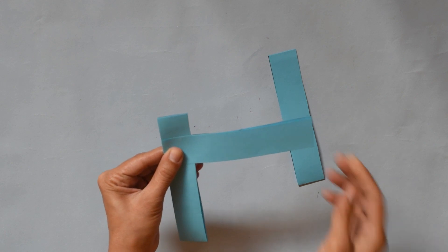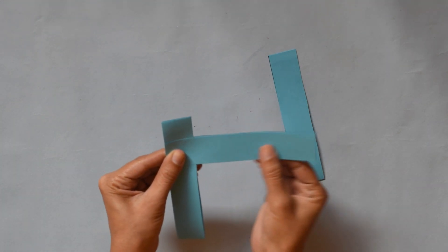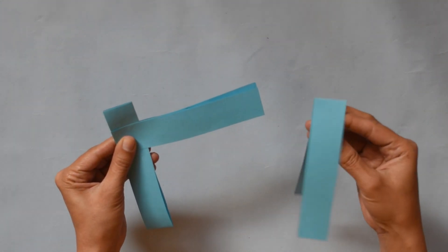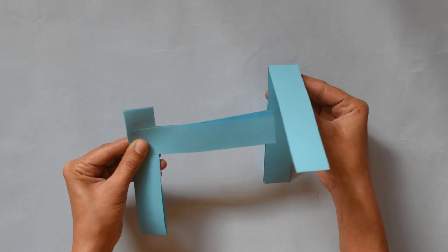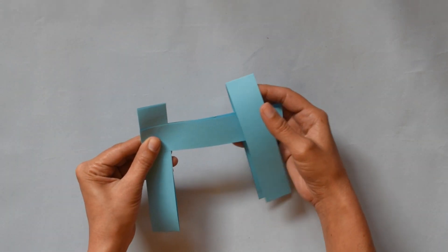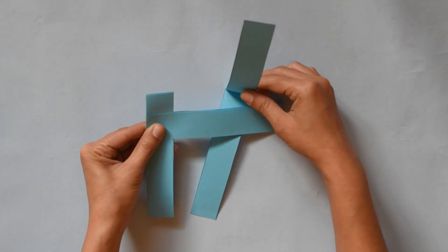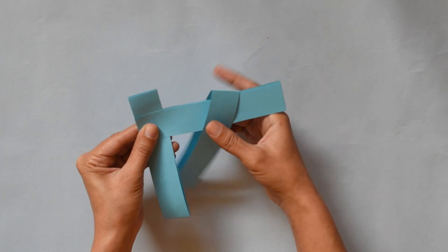Hold it with your finger. Now this is your opening part. Hold like this. Take the third one. Look carefully. This is your opening part. Put these strips here. Look carefully. Put these strips here and close it.